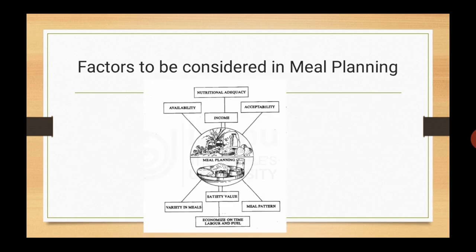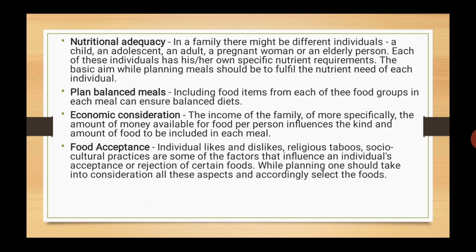Factors to be considered in meal planning: First is nutritional adequacy. In a family there might be different individuals like a child, an adolescent, an adult, a pregnant woman or an elderly person. Each has their own specific nutrient requirements, and the basic aim while preparing meals should be to fulfill the nutrient need of each individual. Second is to plan balanced meals — including food items from each of the food groups in each meal can ensure balanced diets. Next is economic consideration: the income of the family and the amount of money available for food per person influences the kind and amount of food to be included in each meal.